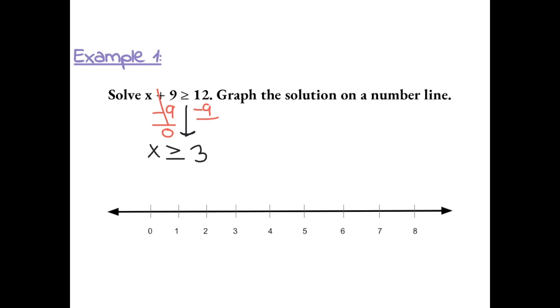To graph this, we put a closed circle at 3, because 3 is included as a solution, and then we shade any number greater than or equal to 3.